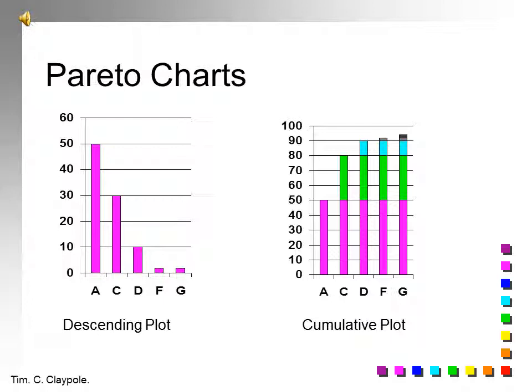The Pareto chart is a good way of presenting to management what's the most important thing and why you are tackling it. If you look at these diagrams, then the one on the left is a descending plot. The most important feature is on the left-hand side, and you can see that solving that would solve 50% of your problems. The cumulative plot on the right-hand side is an alternative way of viewing the same data. That shows how you can get progressively closer to 100% performance as you solve each of the problems.